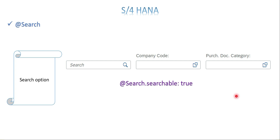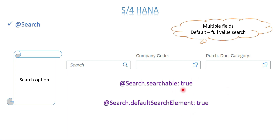The second step is field level. In the CDS, I want to enable search for only a few fields. The annotation is `search.defaultSearchElement: true` and this goes at the field level of your CDS view. By default, if you enable `searchable: true` and `defaultSearchElement: true`, this is applicable only for full value search - if it is a plant you have to enter all four digits, and if it is a text field you have to enter the entire text.